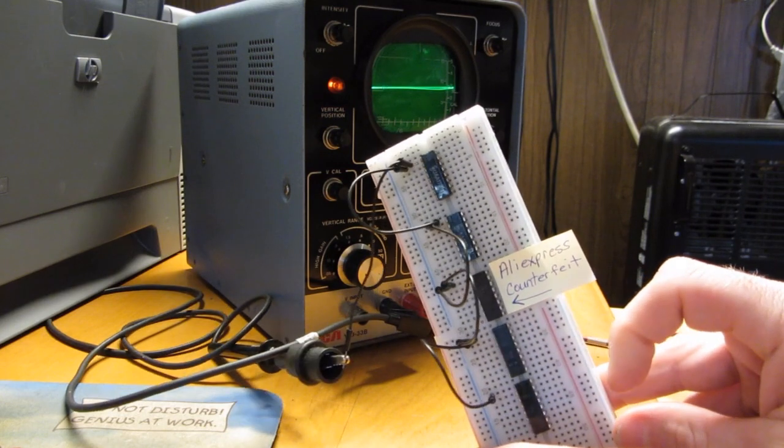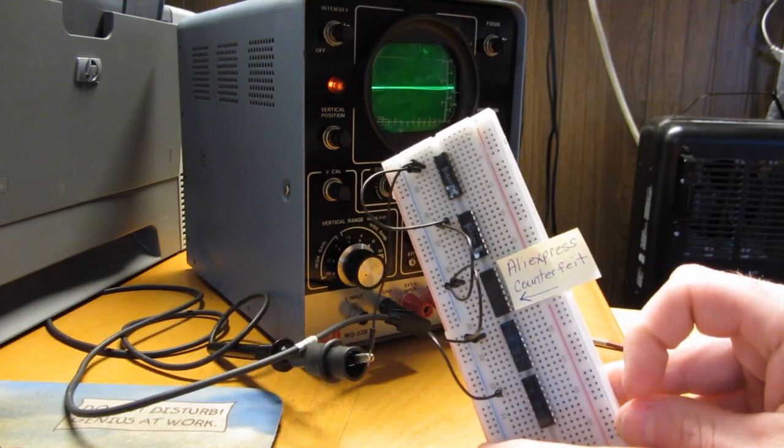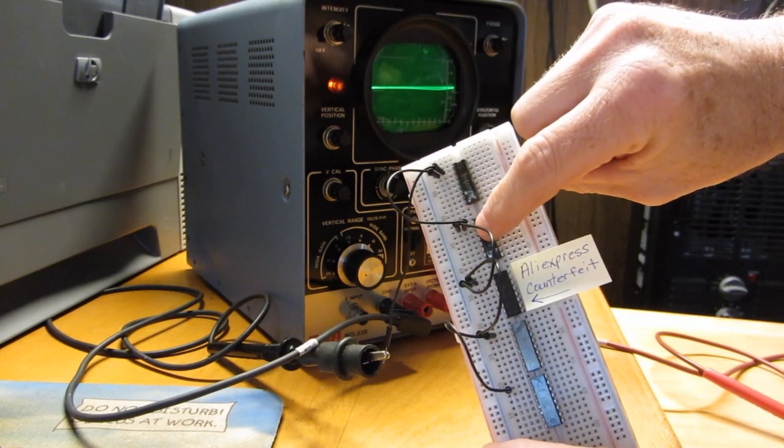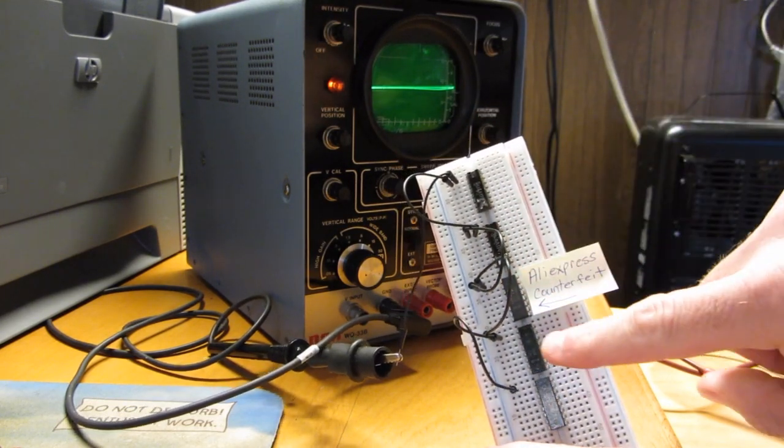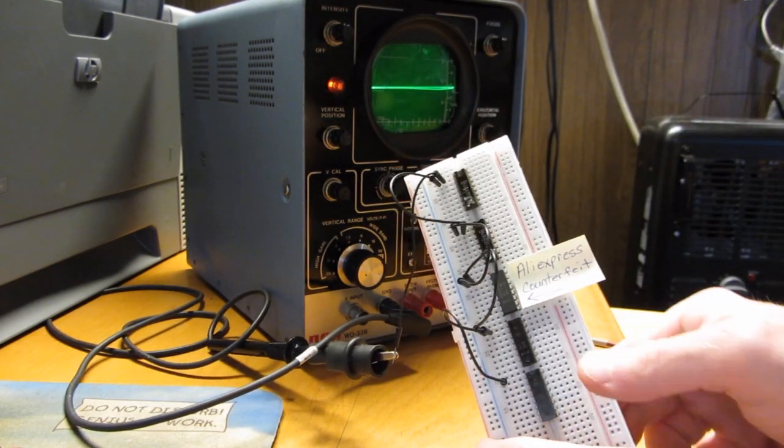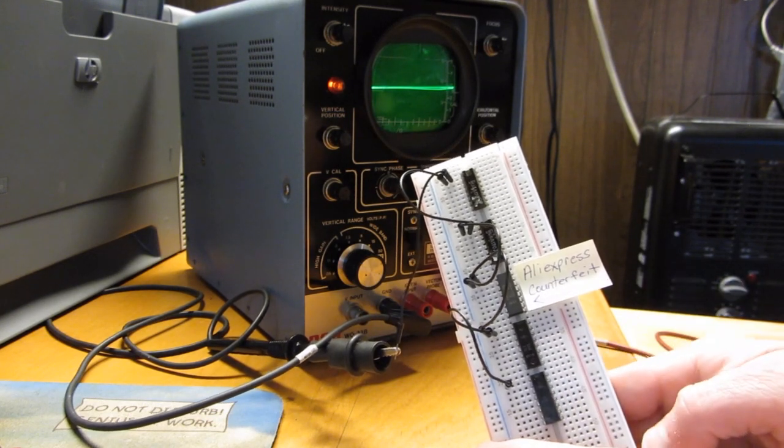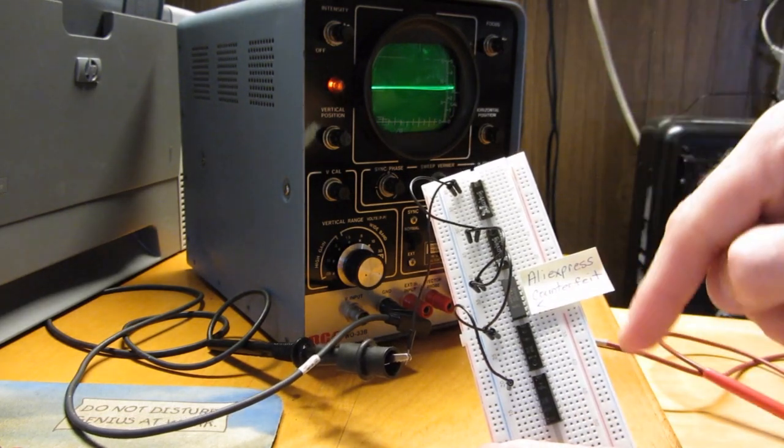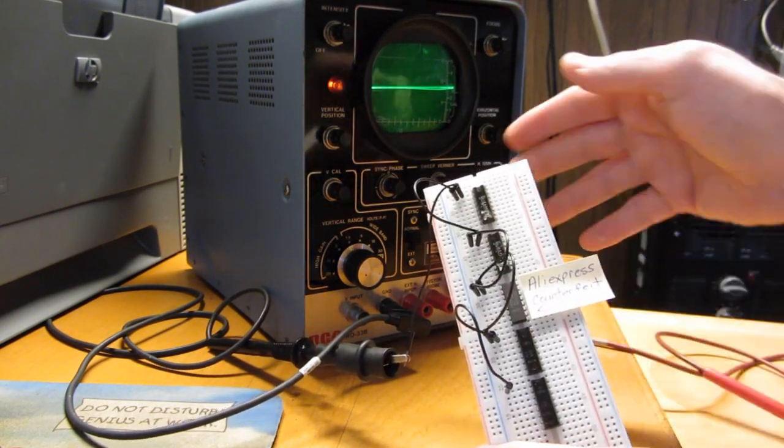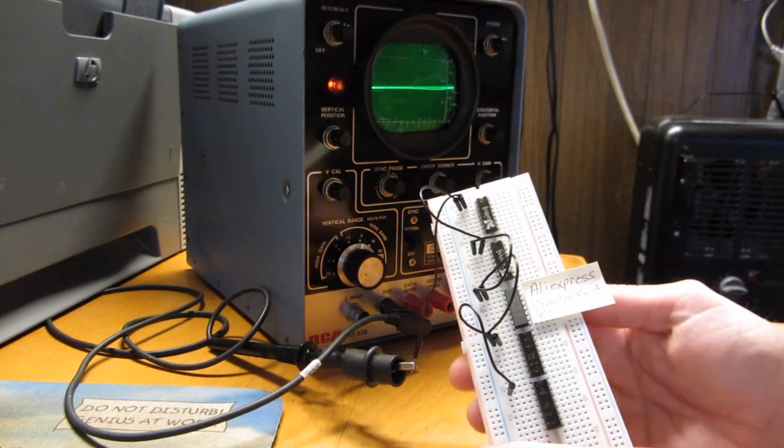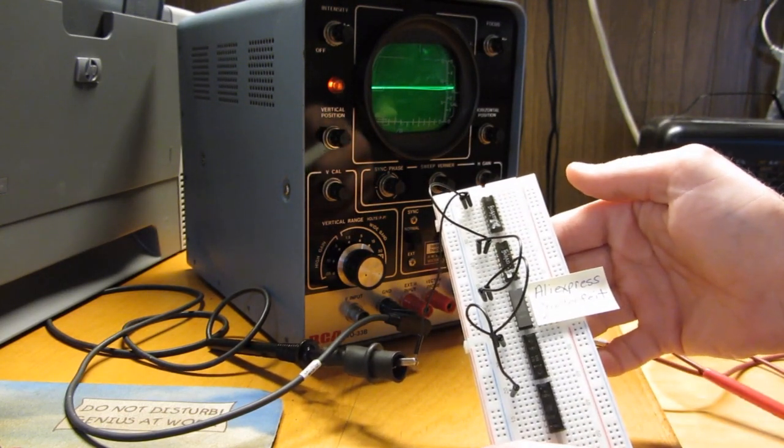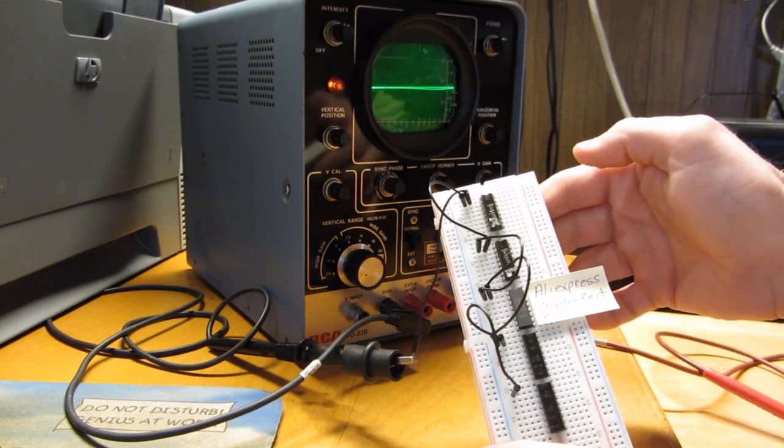This middle one here was the counterfeit one from AliExpress. This is defective, original, good original, counterfeit, and 2 here that are brand new off of eBay. And even though they were from China, they are the correct IC. And if you sweep up the right side, this is all consistent too. But this identified the original IC that was bad and also identified the original IC that was good. And it identified the counterfeit IC.